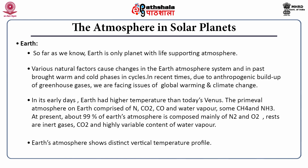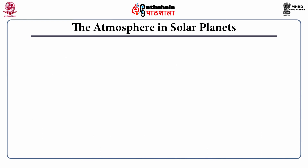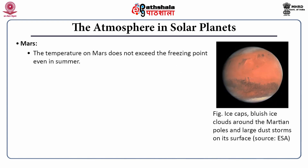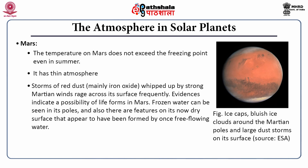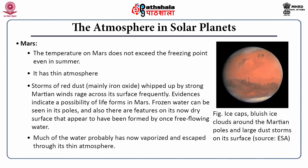Next comes Mars. The temperature on Mars does not exceed the freezing point even during summer. It has a thin atmosphere. Storms of red dust whipped by strong Martian winds sweep across its surface frequently. Evidence indicates a possibility of life on Mars. Frozen water can be seen at its poles, and there are also channel-like features suggesting that once there may have been free-flowing water, much of which has probably vaporized due to the thin atmosphere.